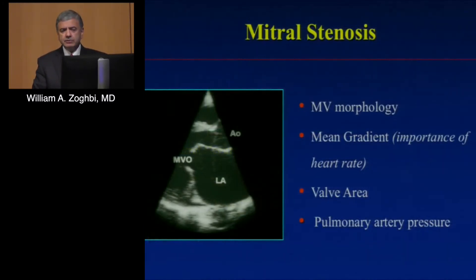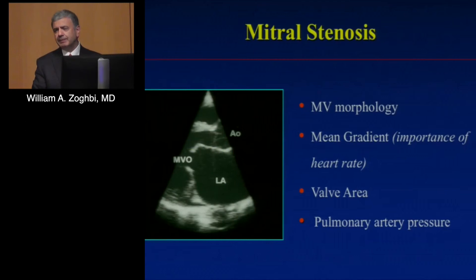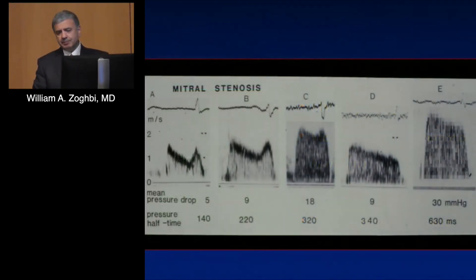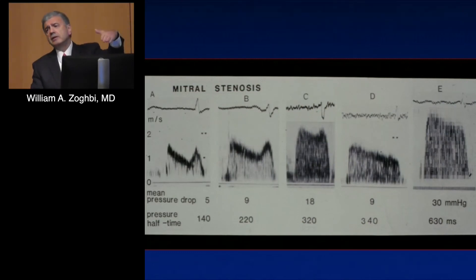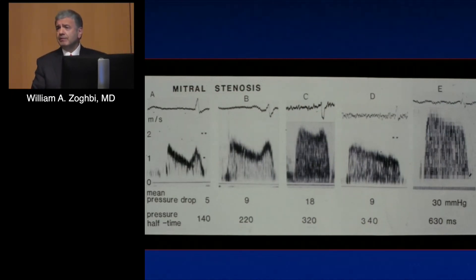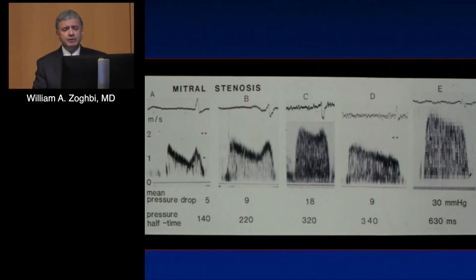A few thoughts on mitral stenosis: it is easier overall to evaluate, but remember that mean gradient is very dependent on heart rate — very different from aortic stenosis. So whenever you report a mean gradient, always report the heart rate with it. With increasing severity of mitral stenosis, velocity increases and the slope becomes lesser and lesser over time.